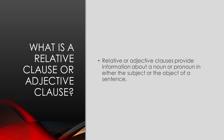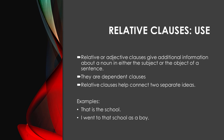What is a relative clause or adjective clause? Relative or adjective clauses provide information about a noun or pronoun in either the subject or the object of a sentence. They are dependent clauses. Relative or adjective clauses give additional information about a noun in either the subject or the object of a sentence. They are dependent clauses. Relative clauses help connect two separate ideas.